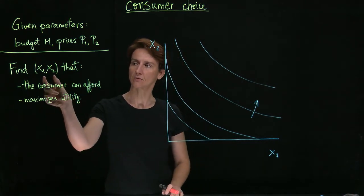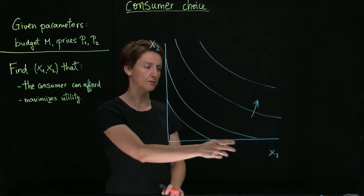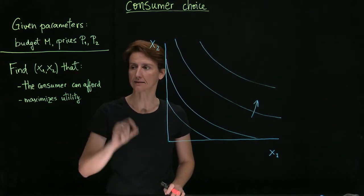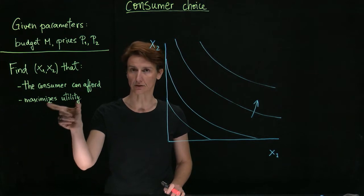The aim is to find the combination of goods, so amounts X1 and X2, that the consumer can afford to buy, given the budget and prices, and that maximizes utility.